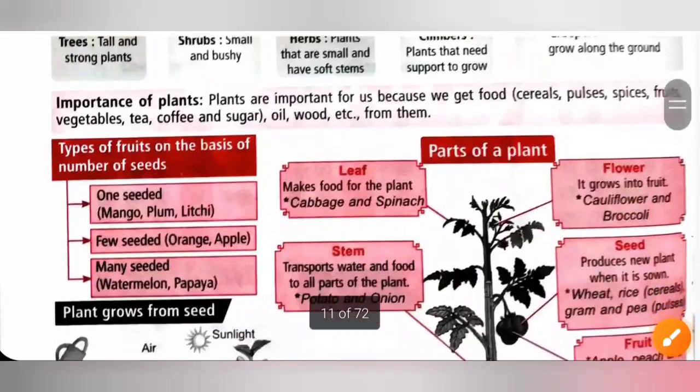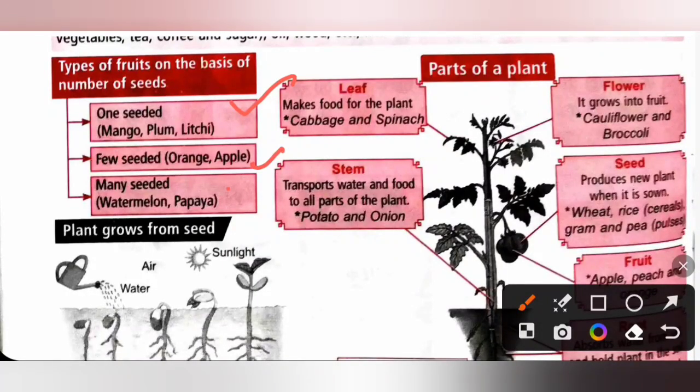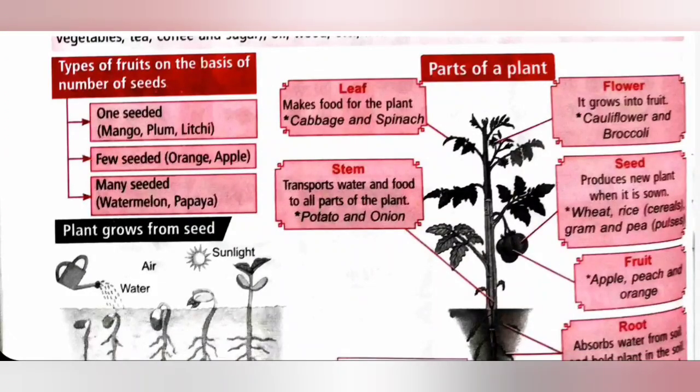Types of fruits on the basis of number of seeds. One seeded fruit: example mango, plum, litchi. Few seeded fruit: orange, apple. Many seeded fruit: example watermelon and papaya. Plant needs air, water and sunlight to grow.